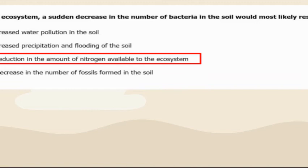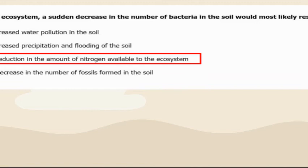A sudden decrease in the number of bacteria in the soil would most likely result in a reduction in the amount of nitrogen available in the ecosystem. This wouldn't affect fossils, precipitation, or water pollution. Bacteria process and produce nitrogen for us, so less bacteria means less nitrogen available.